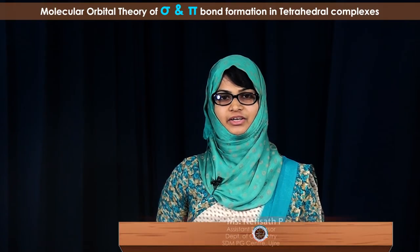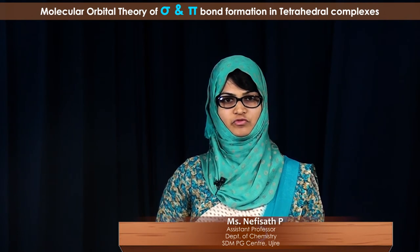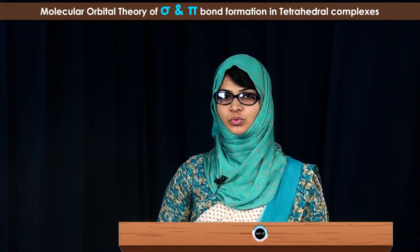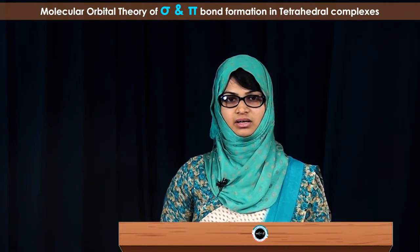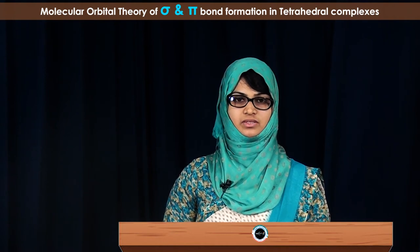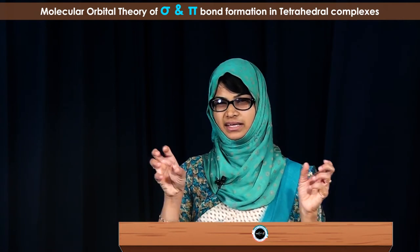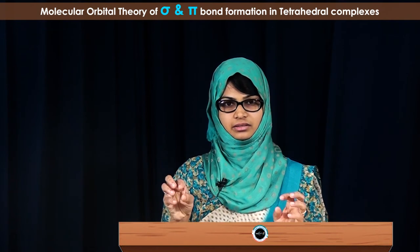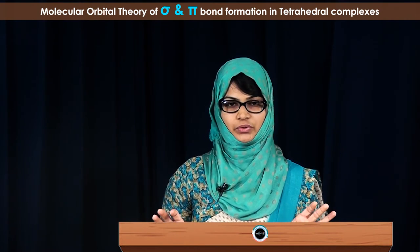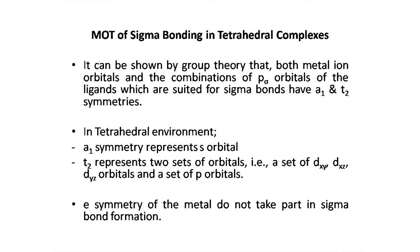We had already studied the molecular orbital theory of sigma bond formation and pi bond formation in octahedral complexes. Now let us move on to tetrahedral complexes and study the sigma as well as the pi bond formation. In tetrahedral complexes there are four ligands, and if we place them in a cube, the ligands occupy alternative positions of the cube. Therefore, none of the ligands and the metal orbitals are in direct combination or directing towards each other. The sigma and pi bond formations have their own symmetries, and we shall study the sigma bond formation first.